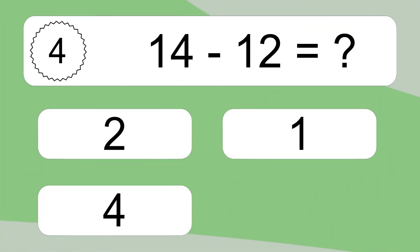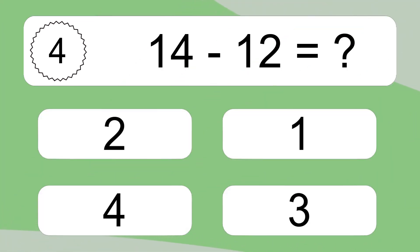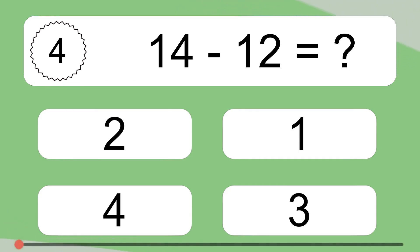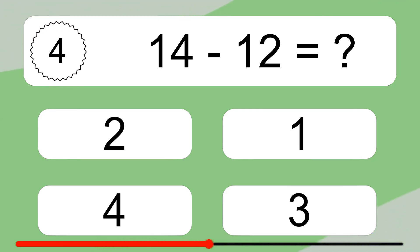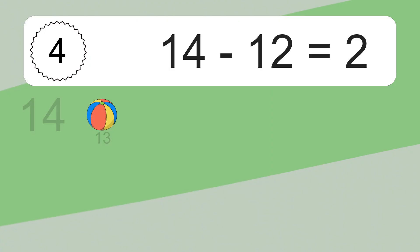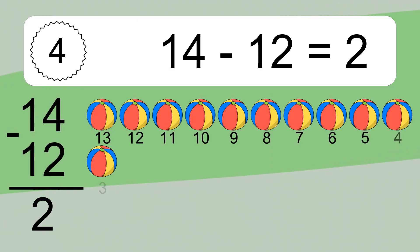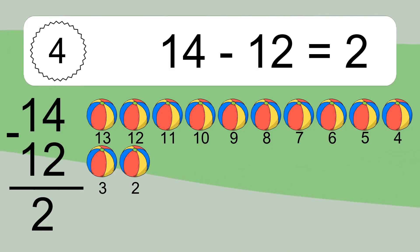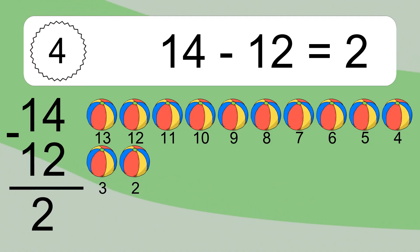14 minus 12 equals 2. Let's count it: 13, 12, 11, 10, 9, 8, 7, 6, 5, 4, 3.